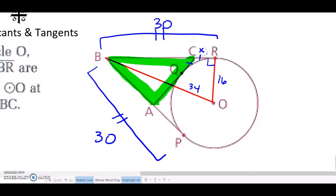So if I let CR be X, that means QC is also X, and BC would be 30 minus X. If I let AP be some unknown Y, then AQ would also have to be Y, and this would be 30 minus Y.